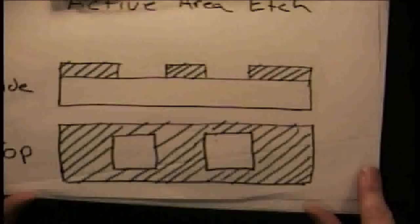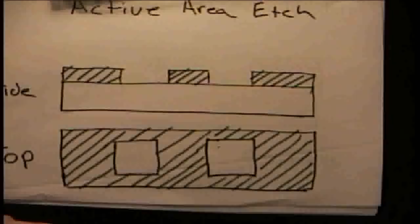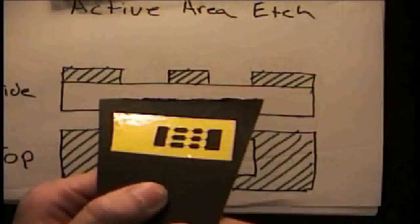You're going to make structures that look like this. It takes about 15 minutes for the Wink Rust and Stain Remover to etch through 5,000 angstroms of silicon. You can tell when you've etched all the way through because the water will not stick to bare silicon.